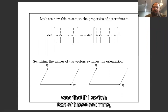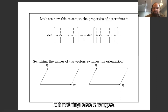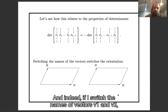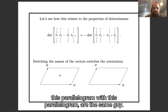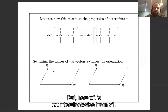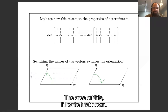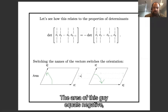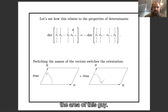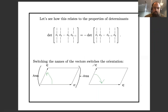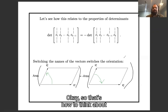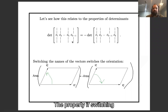The first property of determinants: if I switch two columns I switch the sign, but nothing else changes. Indeed, if I switch the names of v1 and v2, I have the exact same box — this parallelogram and that parallelogram are the same shape — but now v2 is clockwise from v1 instead of counterclockwise, so the sign switches. The area of one equals negative the area of the other. That's how to think about switching columns changing the sign.